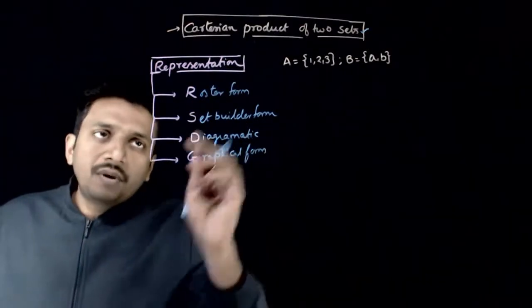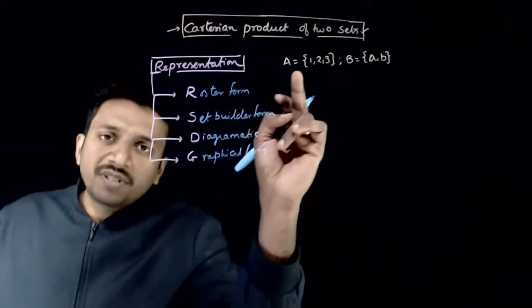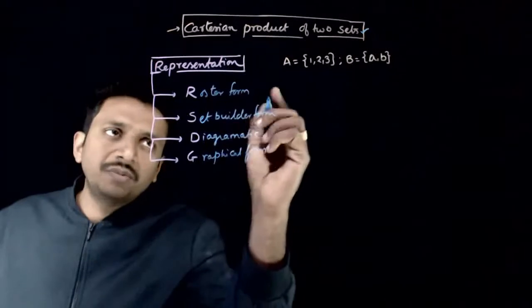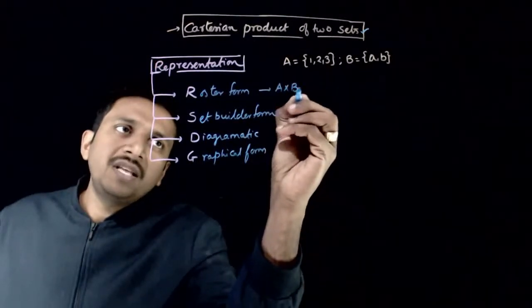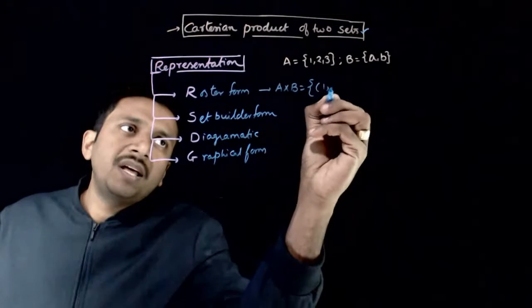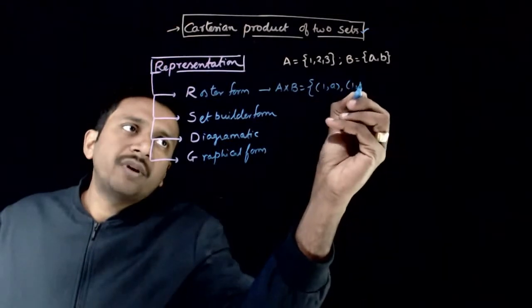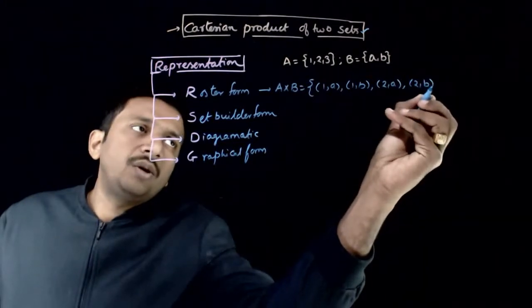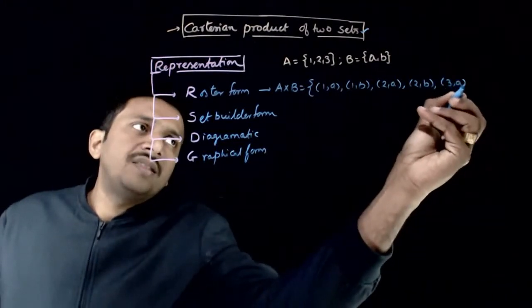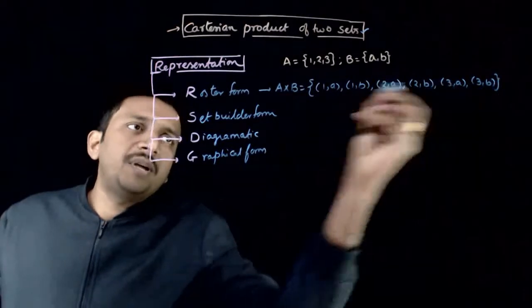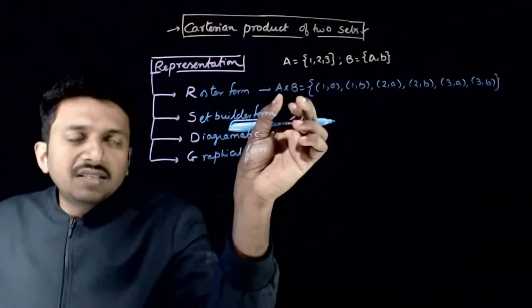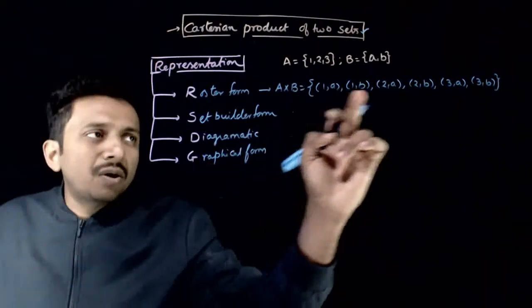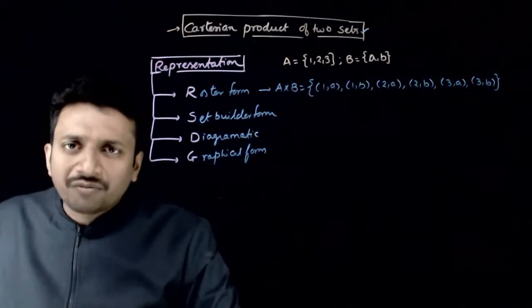Right? Now, what is the Roaster Form of representation of A x B? We have already studied these two. The Roaster Form is nothing but you list out all the possible elements of A x B: 1A, 1B, 2A, 2B, 3A, 3B. So this is the Roaster Form of A x B. I just list out all the elements of A x B. That's what Roaster Form is.